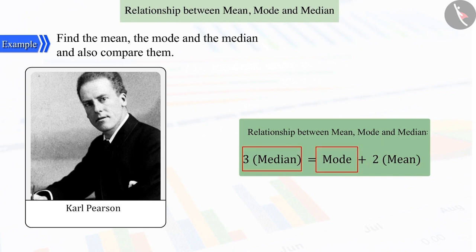In this regard, if any two values are kept in this relation, then we can get the third value.